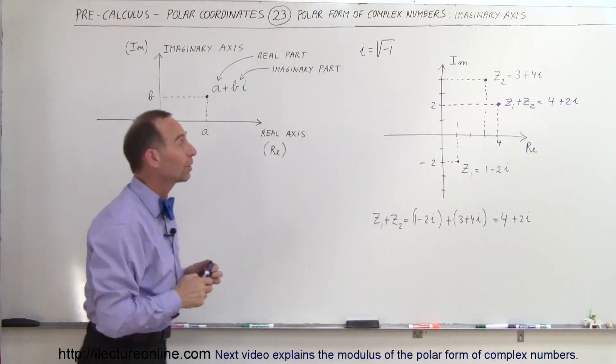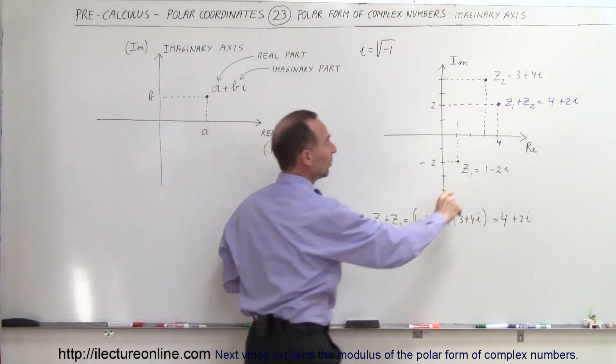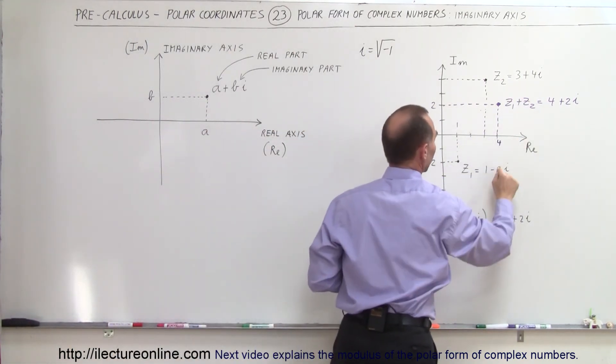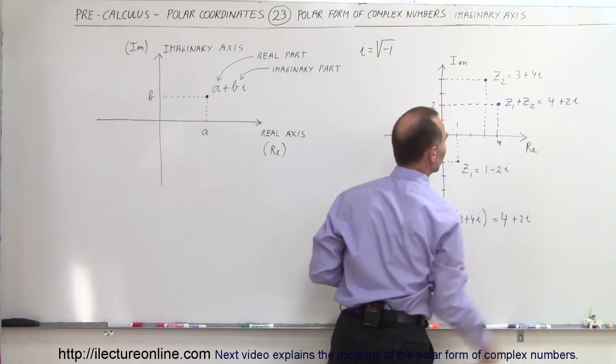So that's how we traditionally work with complex numbers. When we add them together, we add the real parts together to get 4, and the imaginary parts to get plus 2i.